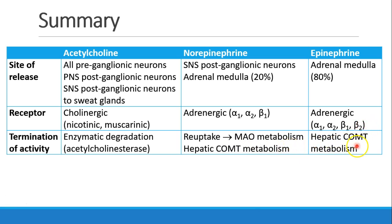Both norepinephrine and epinephrine can go to the liver, where they undergo metabolism by COMT, and are eventually excreted into the urine. One of the metabolites, as we said before, is VMA — vanillylmandelic acid.